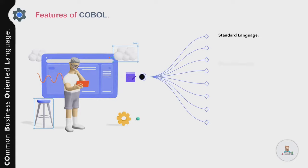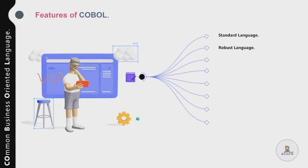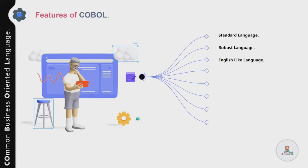The second feature is that COBOL is a robust language. This means there are a number of testing and debugging tools available for COBOL programs on almost all kinds of computing platforms, and these tools are developed by different third-party vendors based on ANSI directives.